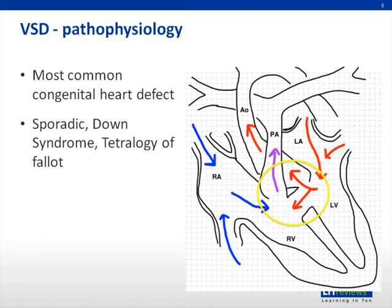The lungs become over-circulated, which leads to the symptoms seen in VSDs as the disease progresses. During the first few weeks of life, pulmonary vascular resistance remains high, which keeps shunting from the left to a minimum and allows patients with large VSDs to be asymptomatic. However, as pulmonary resistance decreases over the first six to eight weeks of life, shunting increases and causes symptoms to develop.